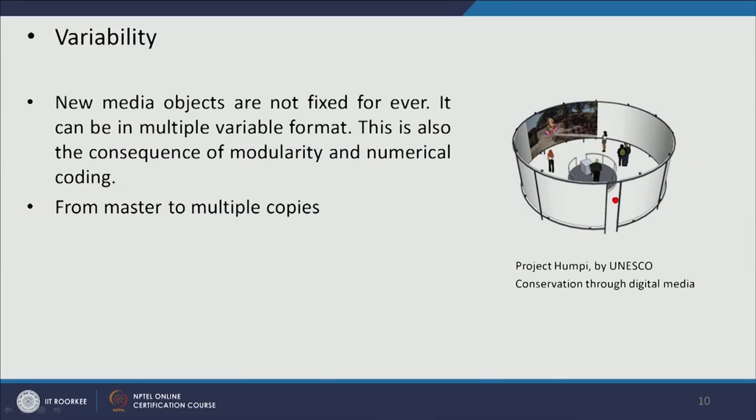Simultaneously this project can be shown in many places of the world and in many formats — on television, on a laptop, on mobile, or on a 360-degree panoramic screen. The next characteristic of new media is transcoding. It is an interface between human and computer — the computer understands a different language, but humans perceive a different language. New media can take the benefits of computer programming and also display things to human beings.